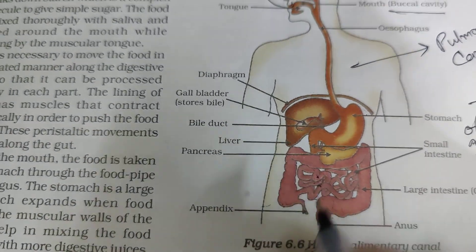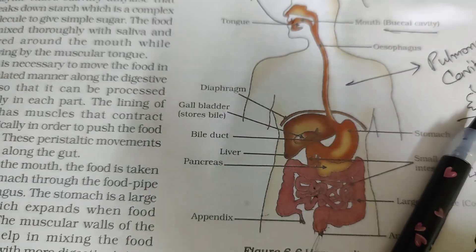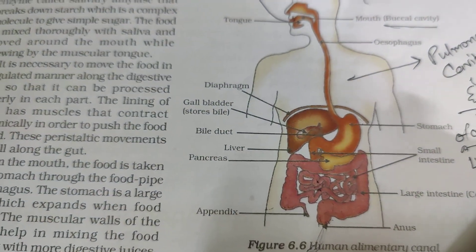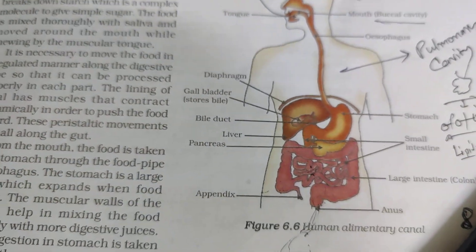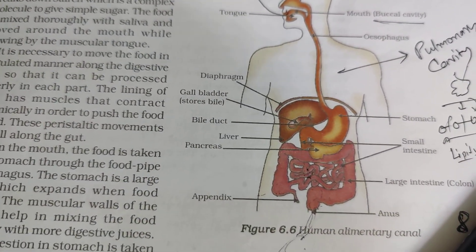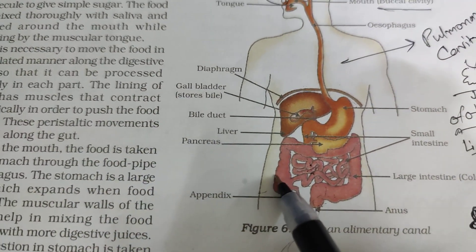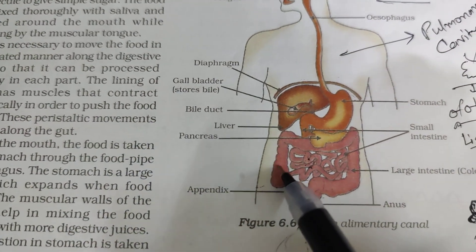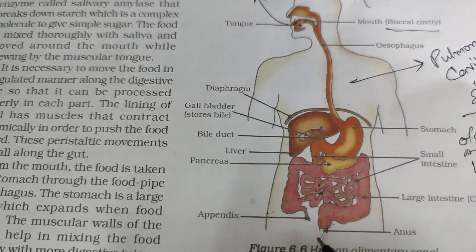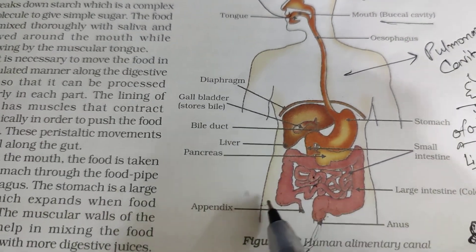Do you know you should consume fibers? Fibers means things like apple with skin, vegetables, and so on — you should eat fibers. Why? Because the more fiber you take, the more the passage of digested food will become easier.